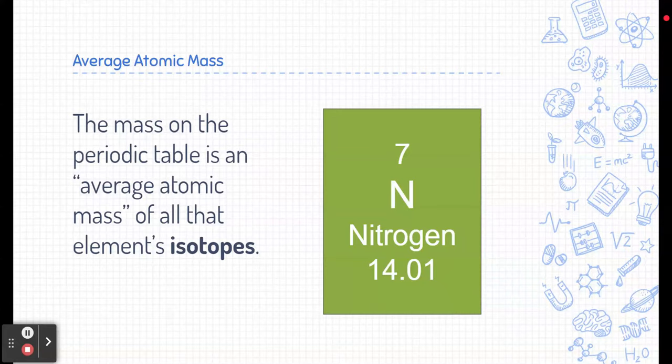I want to talk a little bit more about average atomic mass. Remember the number, the mass on the periodic table is an average mass. That's why it's listed as a decimal. Now what's it an average of? It's an average of all of nitrogen's or whatever that element's isotopes are. So what are isotopes?